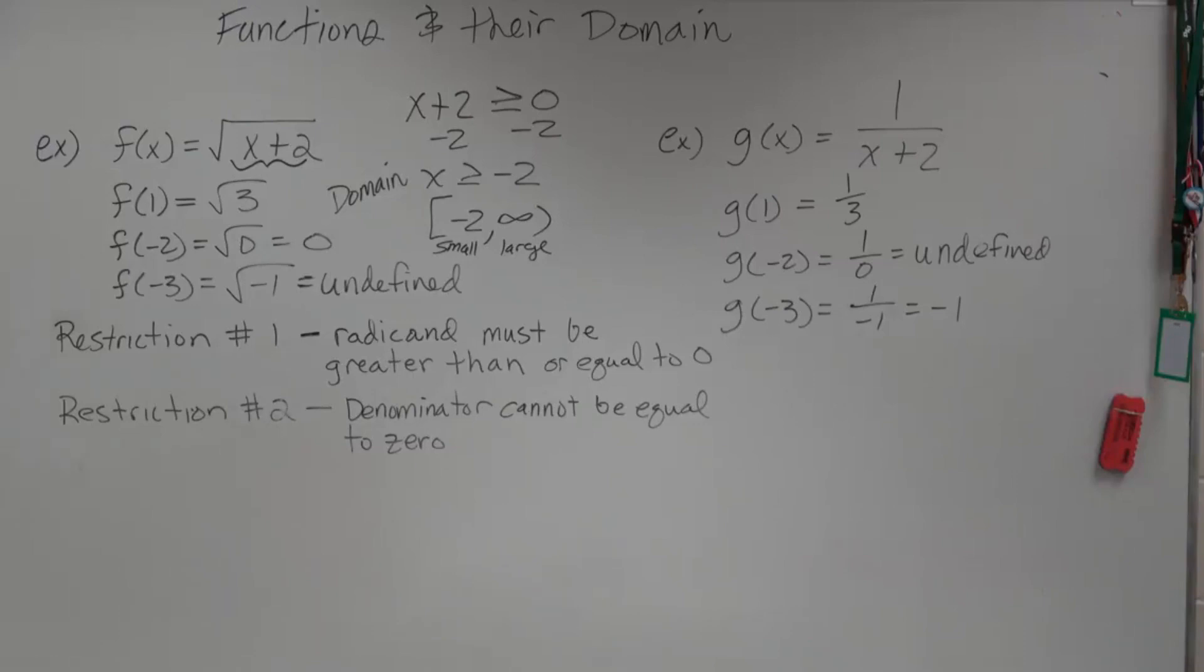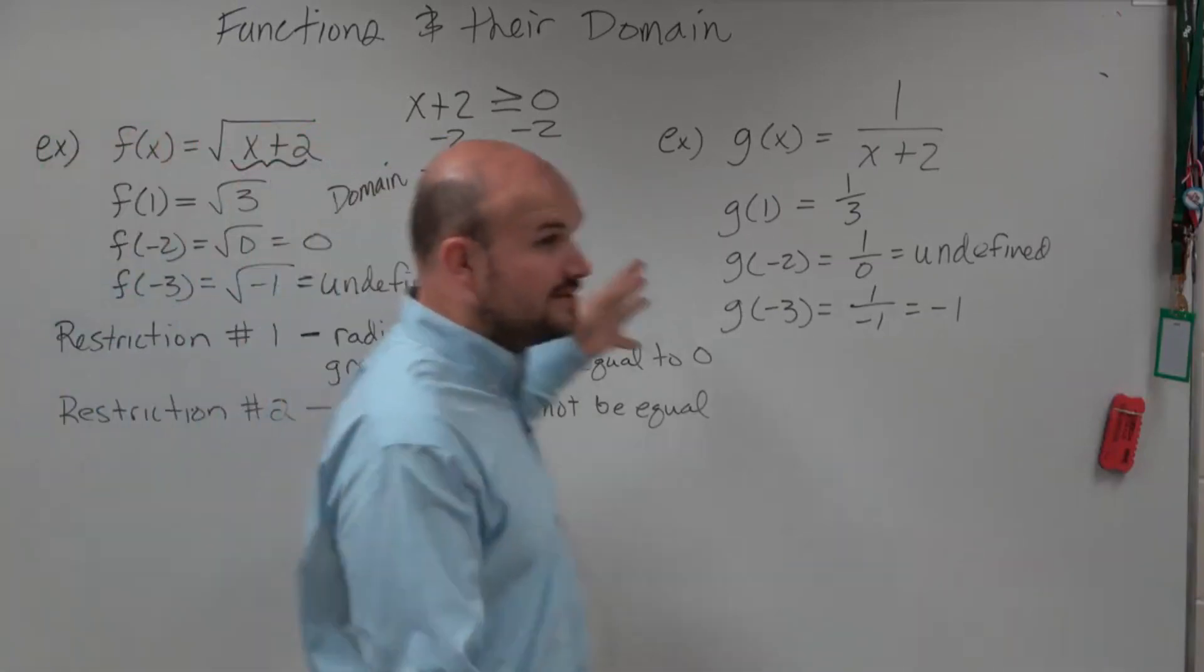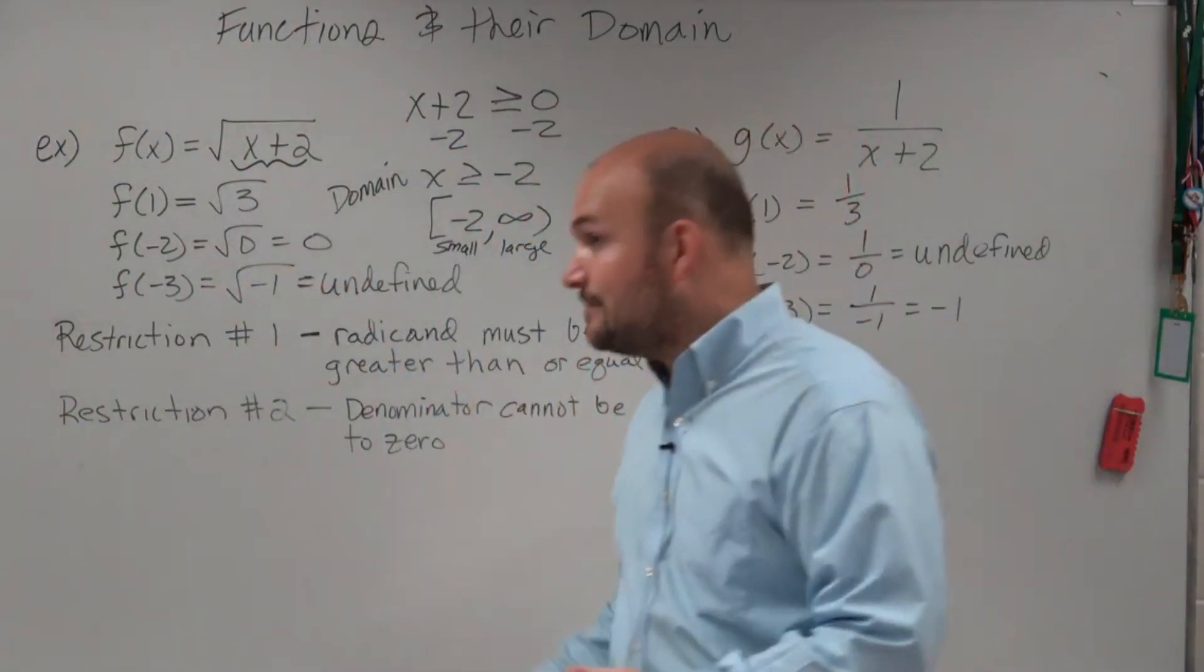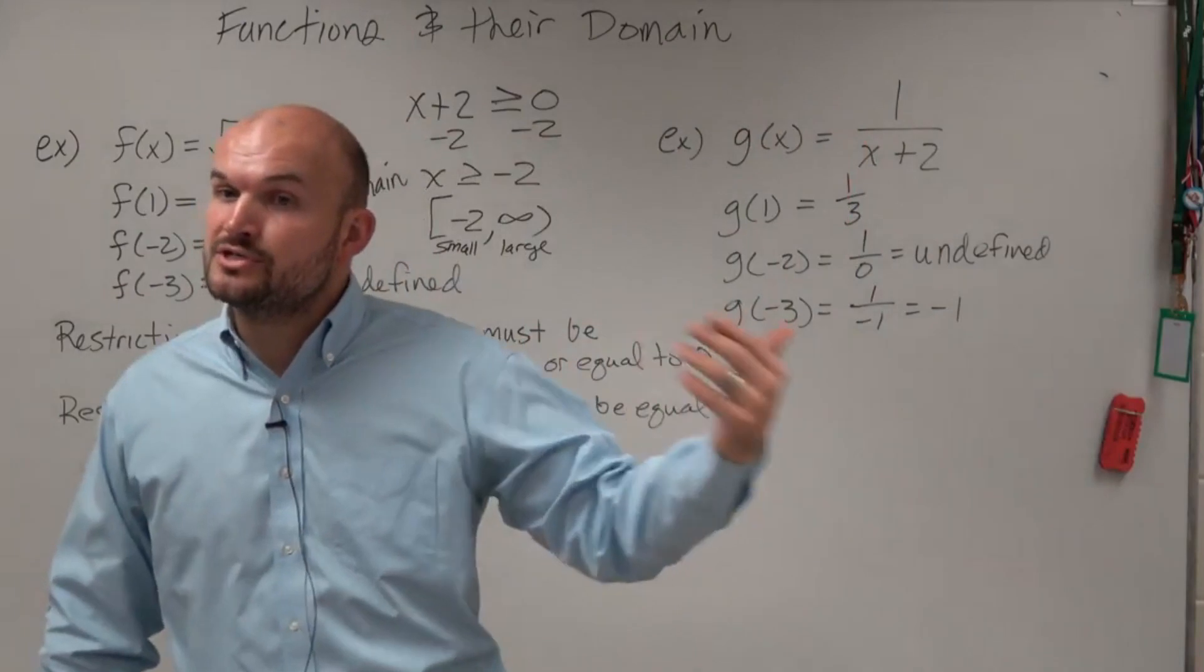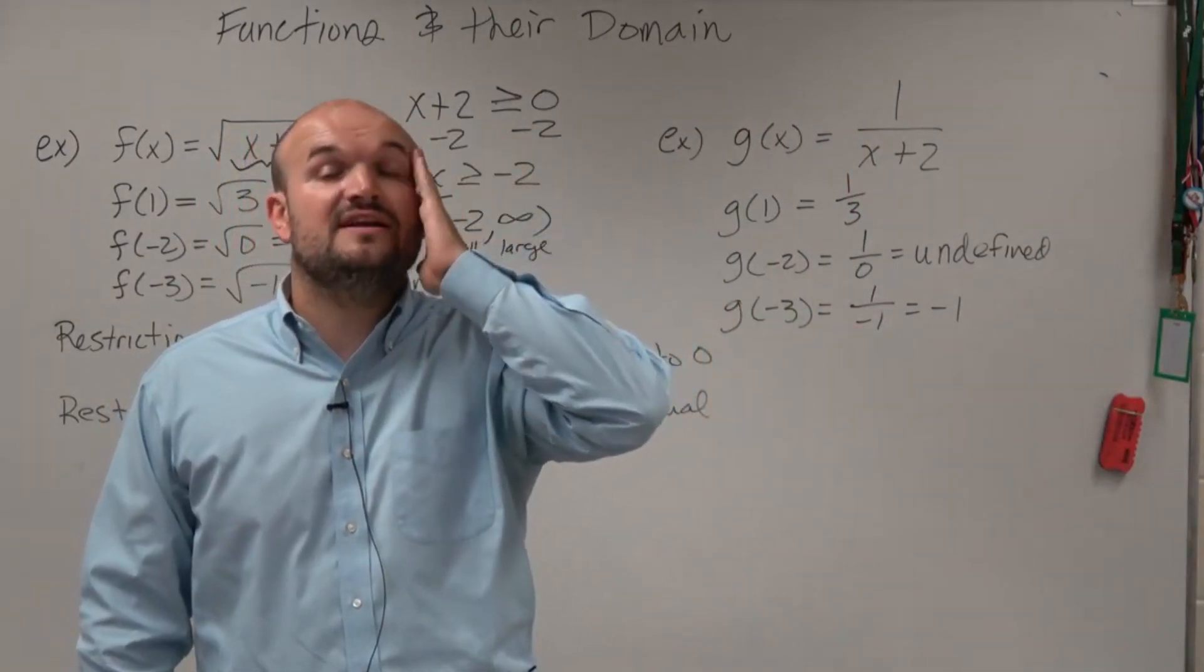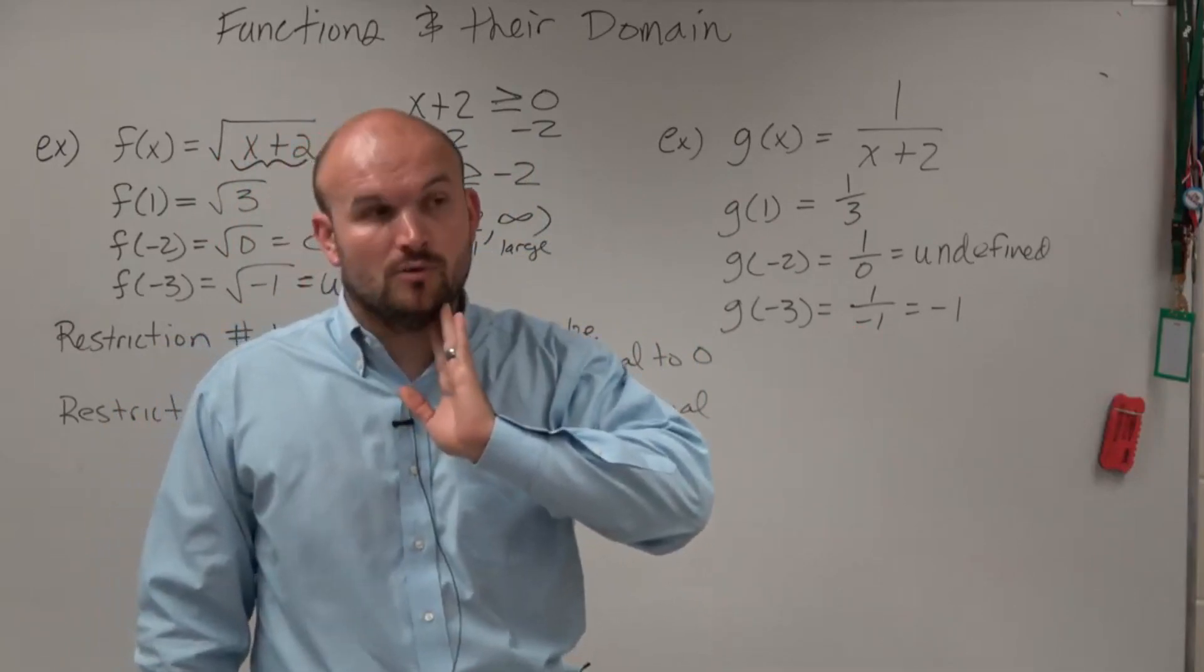We see that we have a denominator. I'll give you a hint - whenever you see a radical, think of restriction number one. Whenever you see a denominator, think of restriction number two. Infinity will always have parentheses, always.